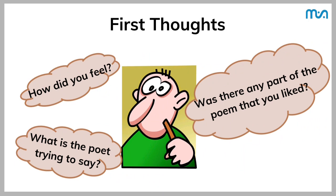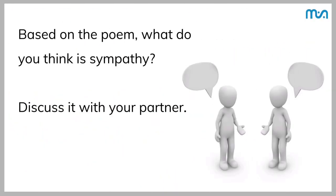Now think about the poem keeping these three questions in your mind. How did you feel when you heard the poem? What is the poet trying to say through this poem? And was there any part of the poem that you liked? Based on the poem, what do you think is sympathy? It's a one minute activity — discuss it with your partner and share your ideas with the class.